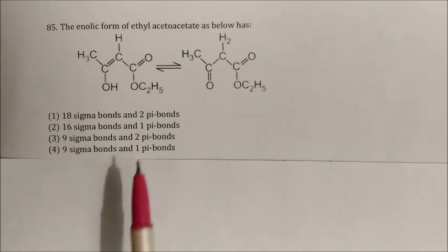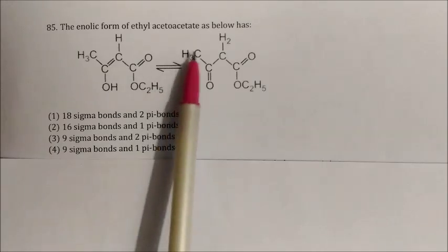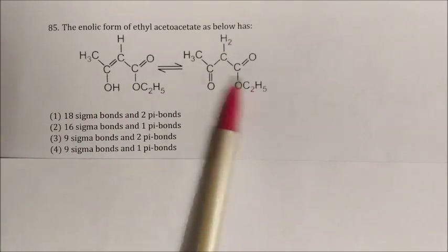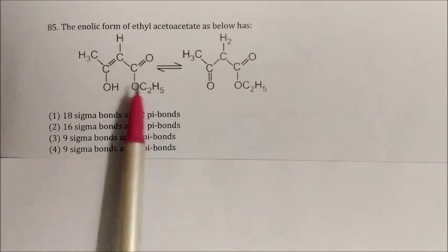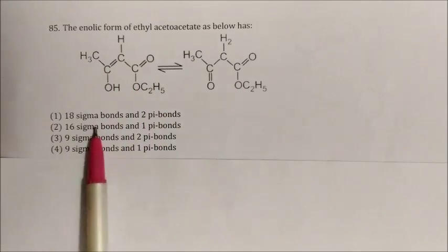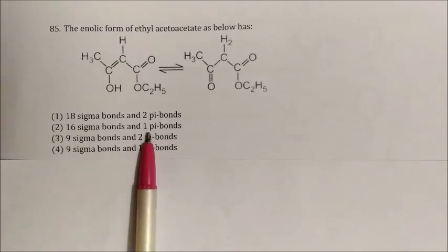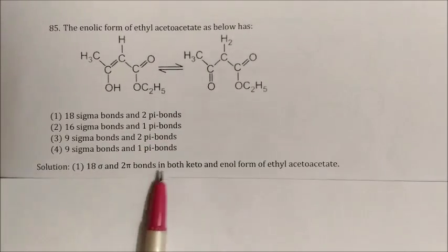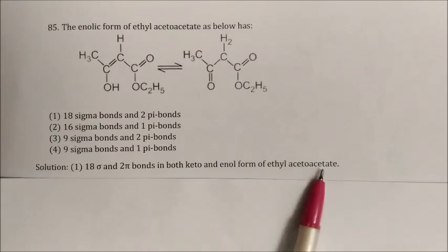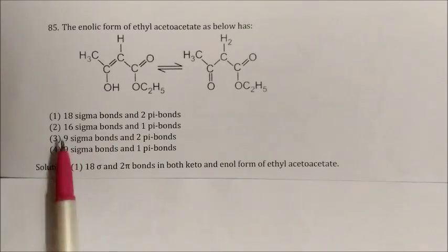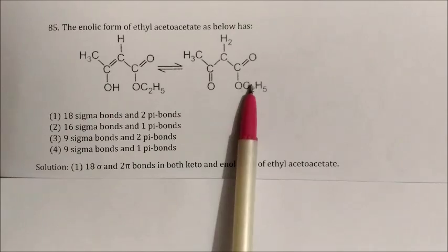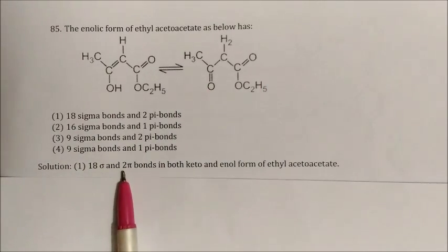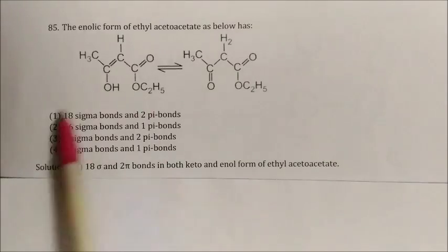Question: The enolic form of ethyl acetoacetate is shown. How many sigma and pi bonds does it contain? In the enol form of ethyl acetoacetate, there are 18 sigma bonds and 2 pi bonds — the same count as in the keto form. Answer: option 1, 18 sigma and 2 pi bonds.